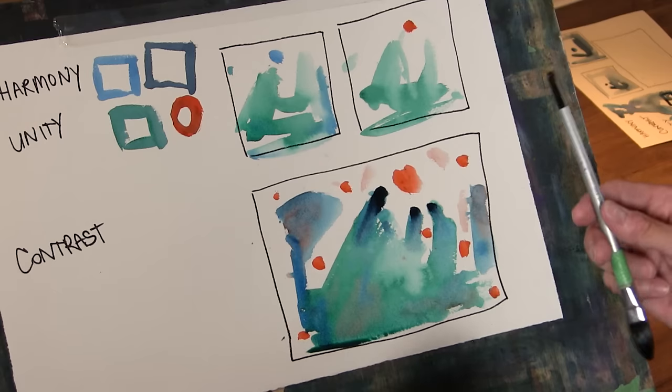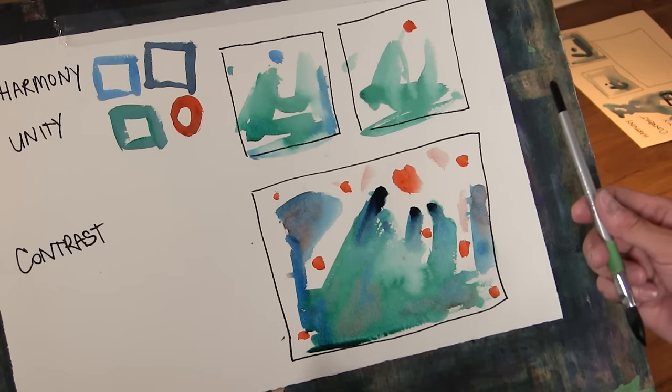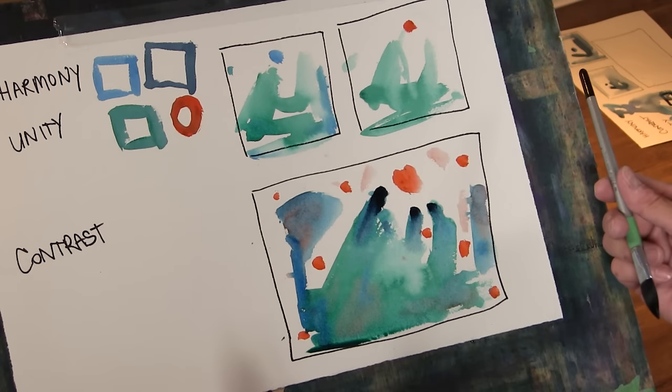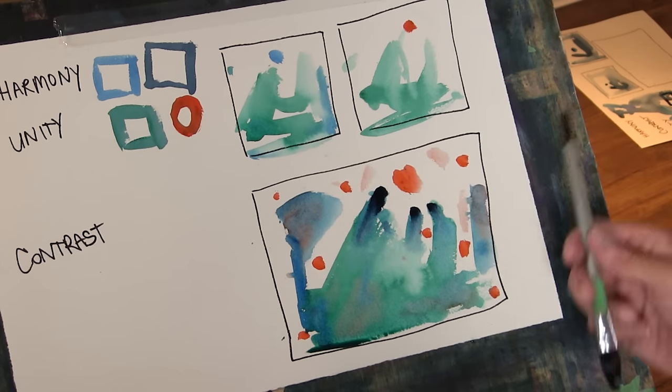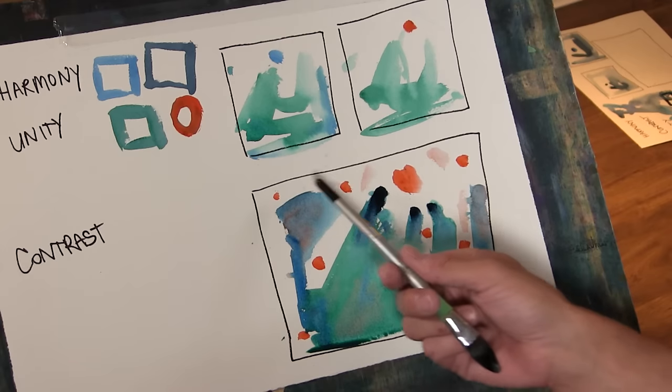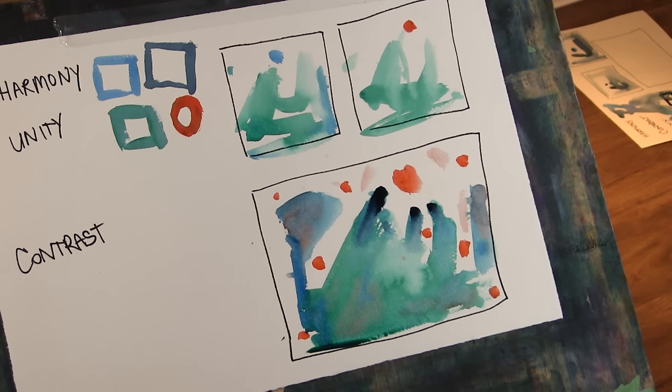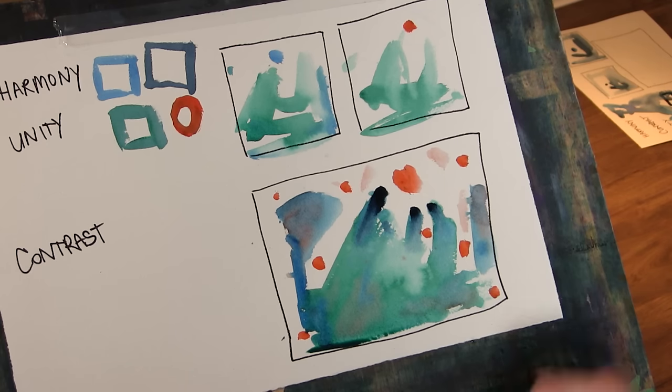It could be a shape, it could be a value, it could be a color—it could be anything in your painting that just looks like it doesn't belong. And the way to make it belong is to echo its influence in other areas of the painting or echo the actual thing itself. So if we're talking about a dot of orange we can put other dots of orange in there and now it looks like dots of orange belong.